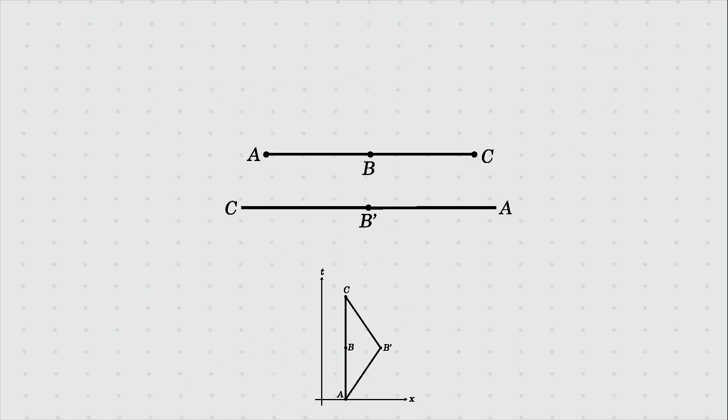Since Alice's path is non-straight, it has a shorter length and, therefore, shorter proper time. Thus, she will be the one who will age slower.